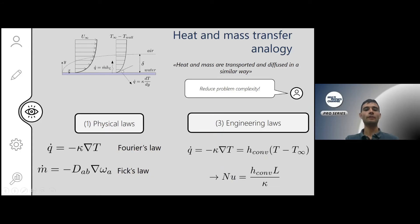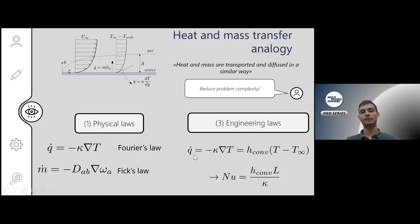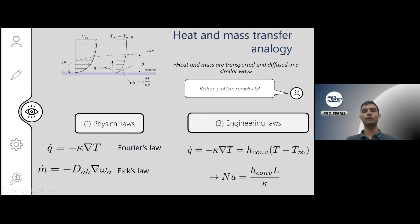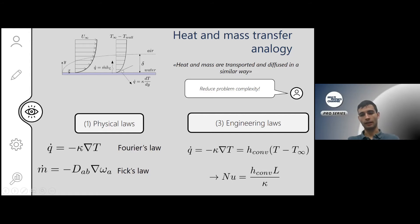In addition to these physical laws, in engineering we like to simplify things to make them more practical. Instead of using physical laws directly, we have engineering correlations: the heat flux expressed as a convection coefficient times a temperature difference — for example, the temperature of the plate minus the temperature of the far-field flow. This convection coefficient summarizes the geometry and fluid flow complexity. Taking this convection coefficient, multiplying by a characteristic length and dividing by conductivity, we get the Nusselt number, which expresses the ratio between heat transfer by convection and heat transfer by conduction.